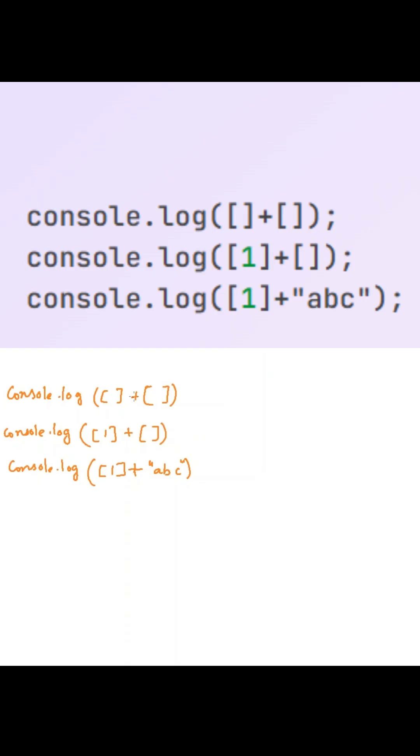Okay. Here we are using addition operator between arrays. In JavaScript, whenever we use addition operator between arrays, then JavaScript will try to convert this arrays into a string by using type coercion concept in JavaScript. So it will internally perform array.toString operation and convert this into strings.